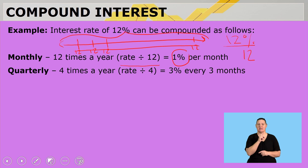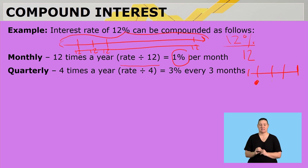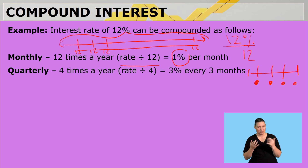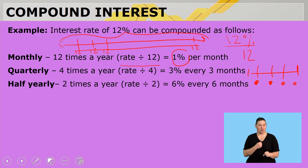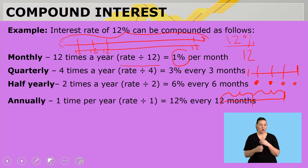Quarterly is four times a year, so you divide the year into four. After the first term it would be 3%, then at the half of the year another 3%, and in the third term another 3%. Half yearly means earning interest for the first half and then interest for the next half. Annually is once a year.